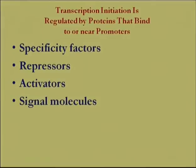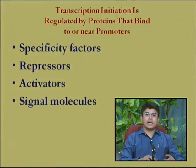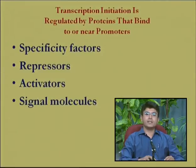Specificity factors are proteins that guide or dictate the specificity of RNA polymerase towards certain sets of promoters. In prokaryotes, the sigma factor is an example of a specificity factor; RNA polymerase is guided to promoters recognized by a particular sigma factor. In eukaryotes, TATA-binding proteins can be regarded as specificity factors — they bind to the TATA box region in eukaryotic promoters and guide RNA polymerase. Sigma 70 is the major common sigma factor recognized by the majority of prokaryotic promoters.